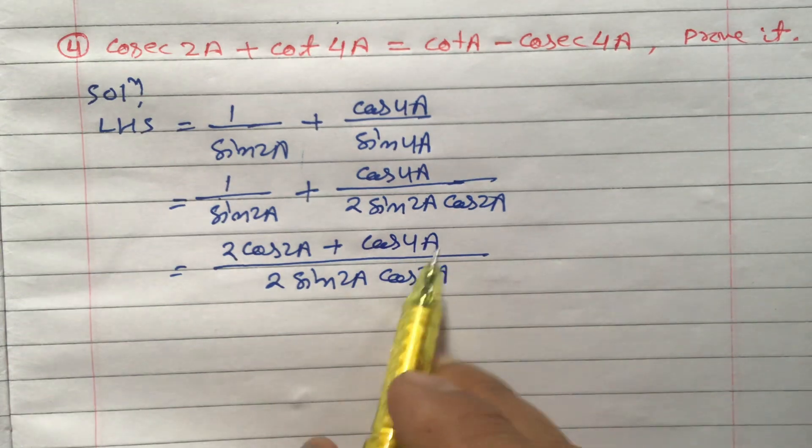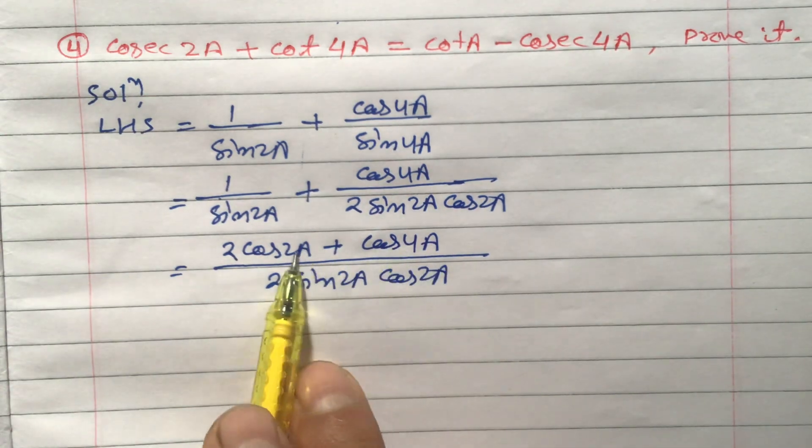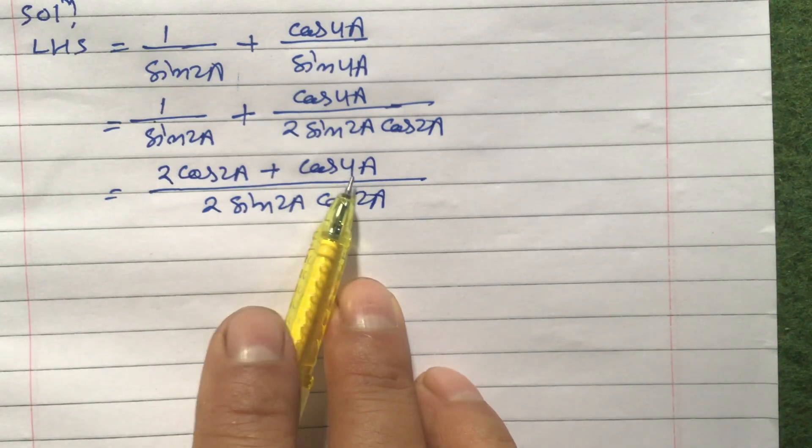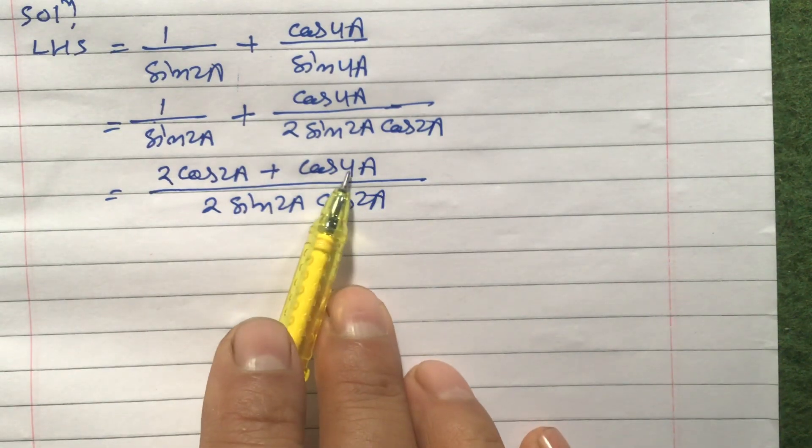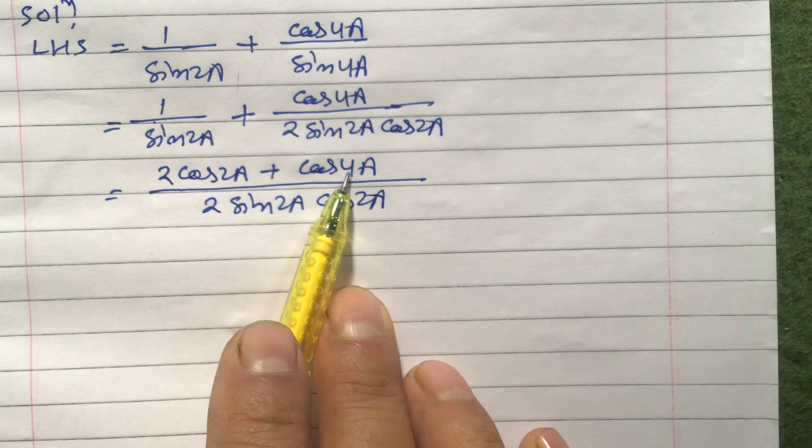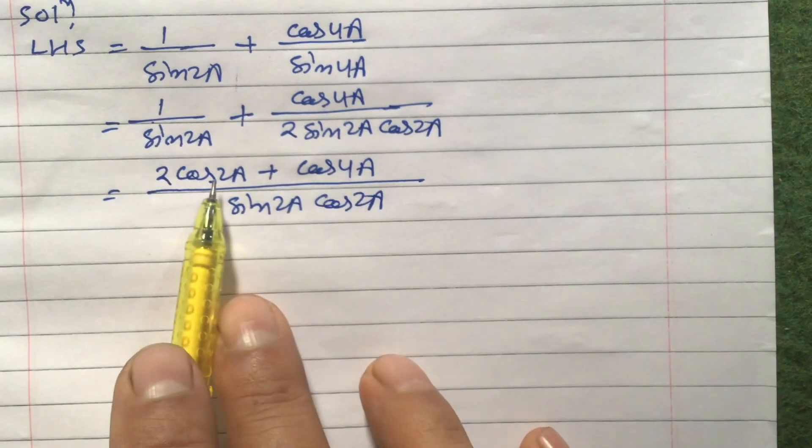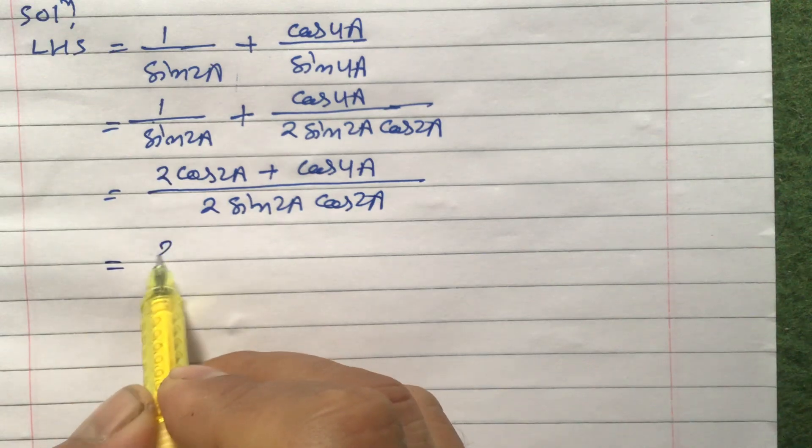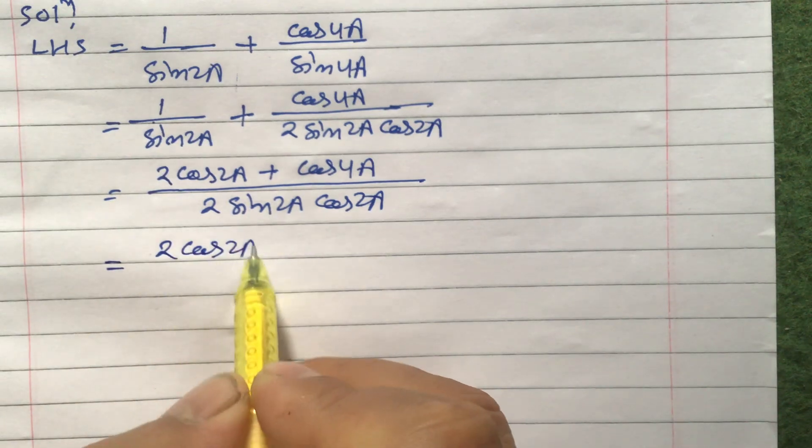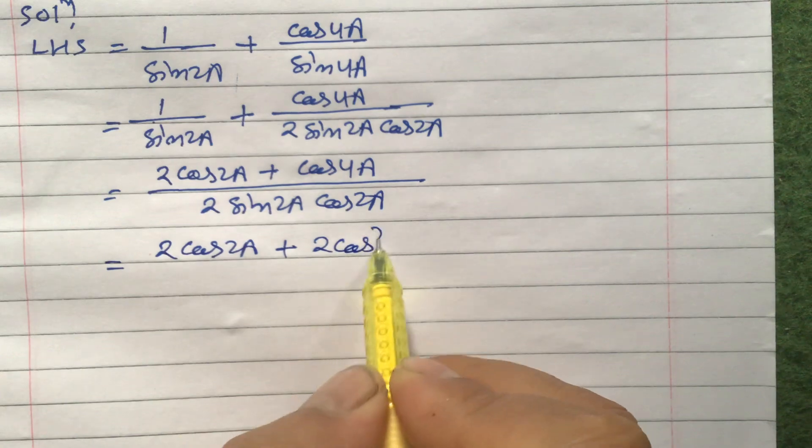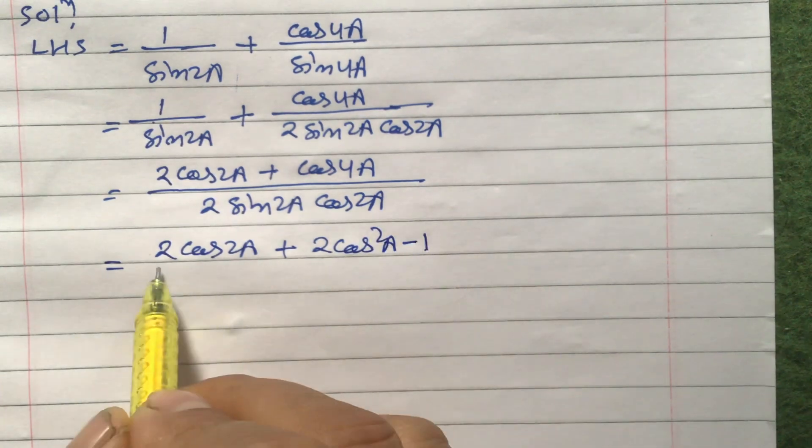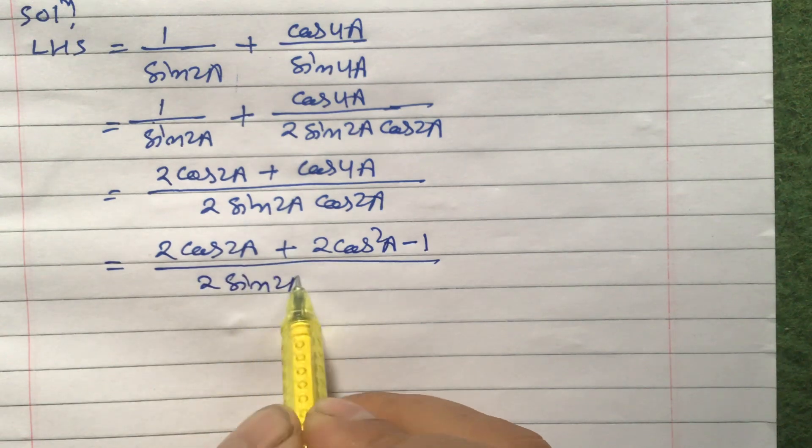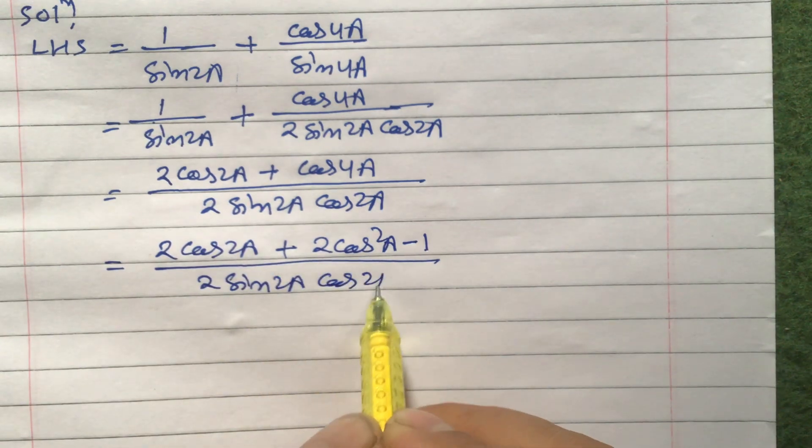Now we need to apply the formula here for cos 4a. Now which formula to apply? To get this one, look at here is also cos. So let us apply the formula in terms of cos. So 2 cos 2a plus 2 cos square 2a minus 1 divided by 2 sine 2a cos 2a.